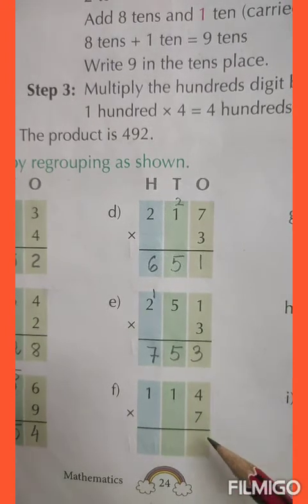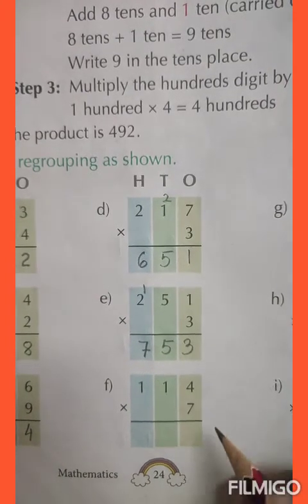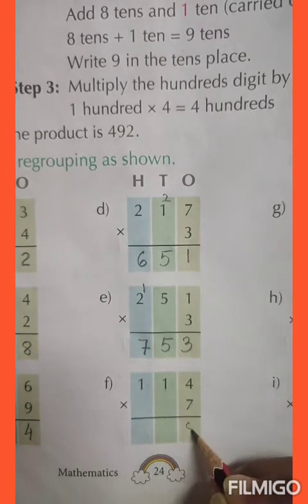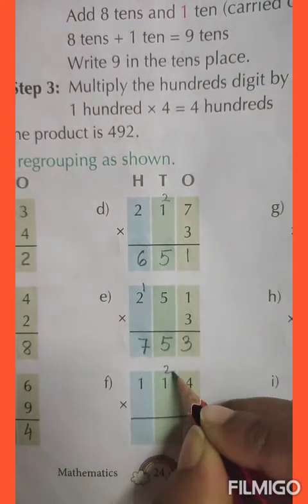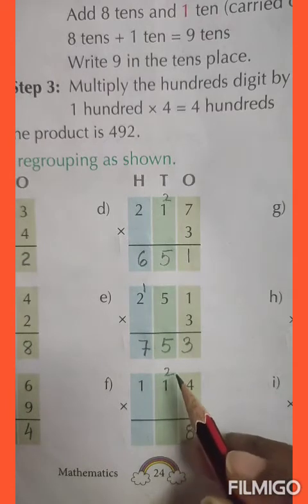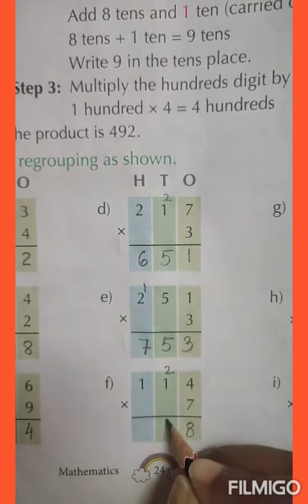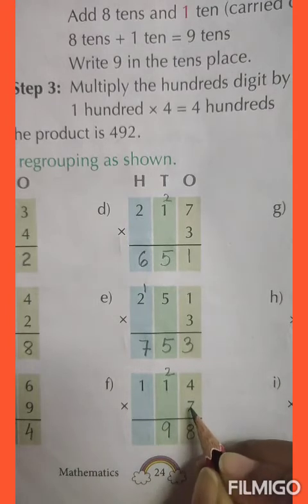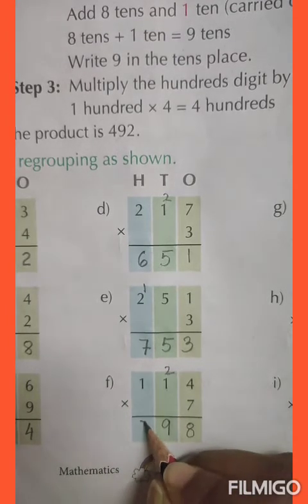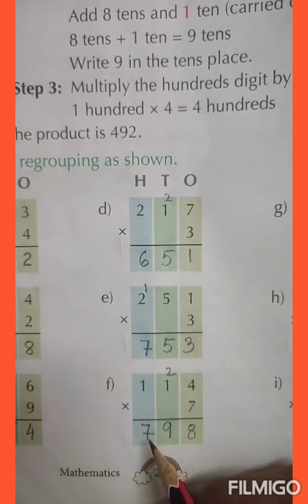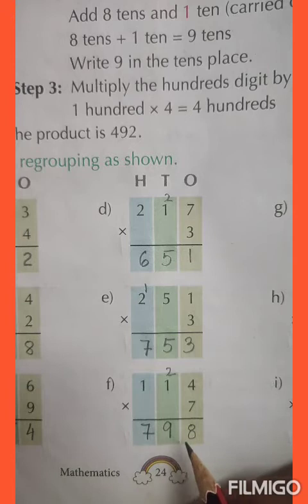Number F: 114 into 7. 7 fours are 28, so I will write 8 and then 2 is carried over. 7 ones are 7 plus 2 is 9. 7 ones are 7. The answer is 798.